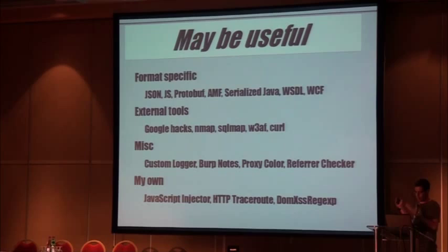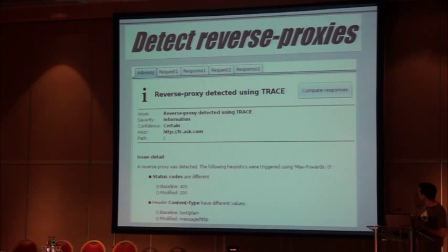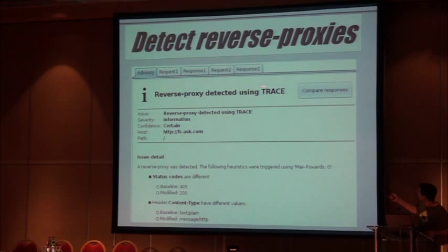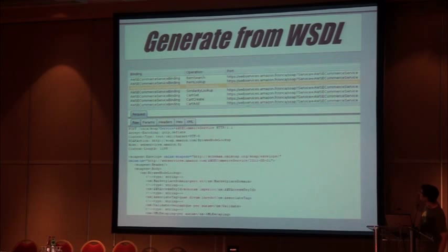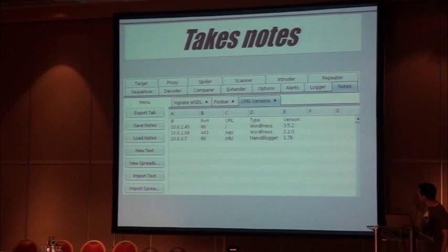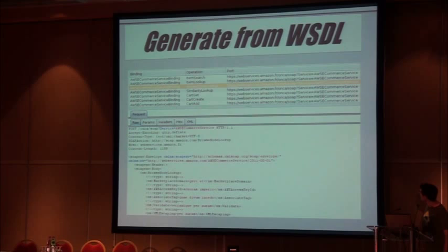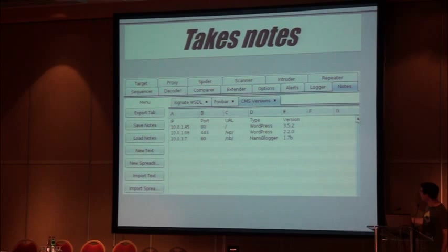That's the kind of output. The extension provides the logic while Burp provides the interface and report generation. You can also use the Comparer to validate whether the tool's decision about finding a reverse proxy is correct. This shows generating sub-requests from a WSDL, taking notes in Burp — now with a spreadsheet interface — in free text or CSV-like format.